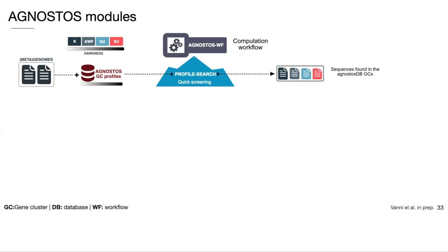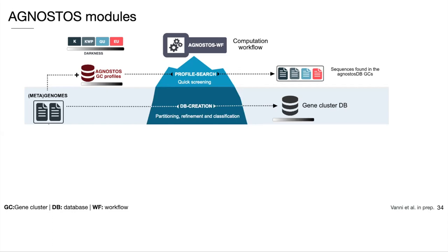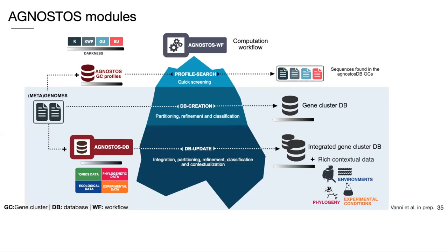If you want to go a bit deeper, you can use the database creation module to partition and characterize your genomic or metagenomic dataset, creating a curated gene cluster database. And if you want to maximize the information retrievable for your dataset, you can integrate your sequences into an existing Agnostos gene cluster database using the database update module. The existing gene cluster database can be the seed provided by default in the workflow, or any other gene cluster database created using the database creation module. From here, you get as output an integrated database of richly characterized and contextualized gene clusters.